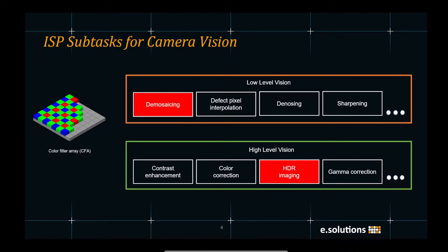The multiple stages of the ISP can be addressed using low-level vision and high-level vision processing methods. Low-level vision uses pixel-level restoration methods for demosaicing, defect pixel interpolation, denoising, sharpening, to name a few. While the high-level vision focus on global operations like contrast enhancement, color correction, HDR imaging, gamma correction, to name a few.